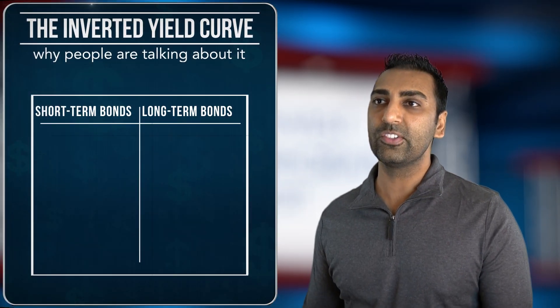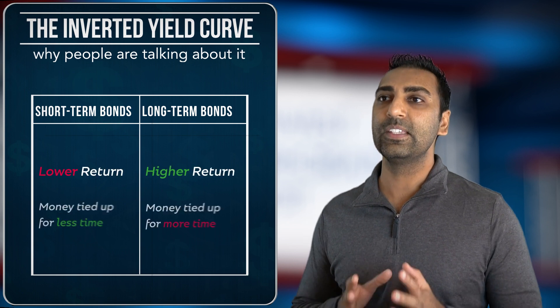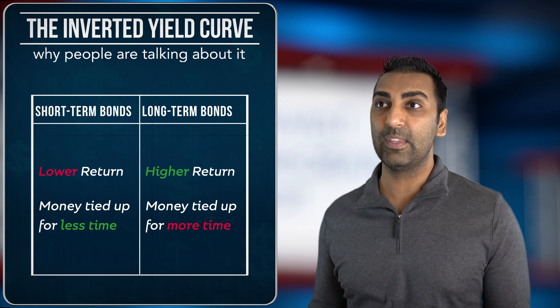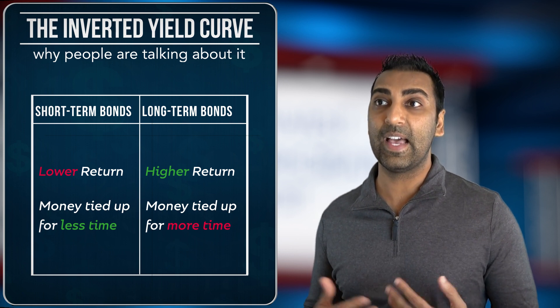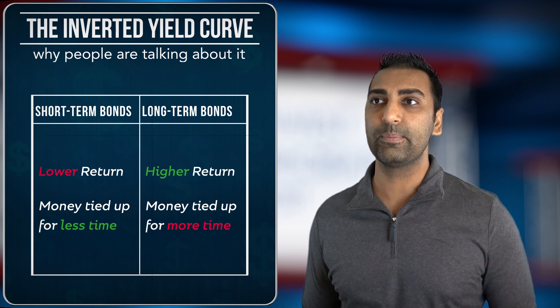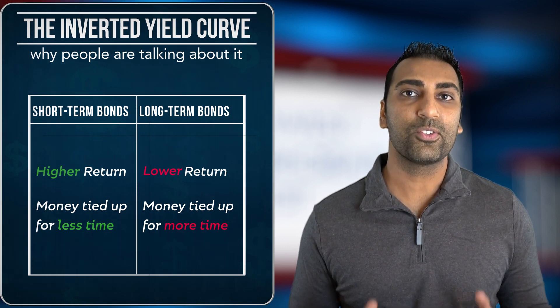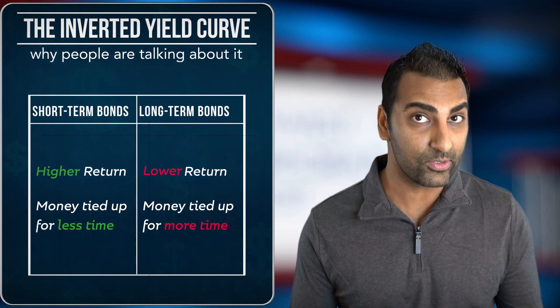If you've been reading any business headlines whatsoever in the past week, you can't help but come across at least one article that mentions the scary inverted yield curve. First, let's start with a normal scenario. The yield on short-term bonds is supposed to be lower than the yield on long-term bonds, because when investors tie up their money for a shorter period of time, they expect a lower return than when they tie up their money for a longer period of time.